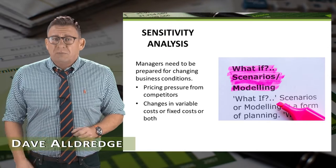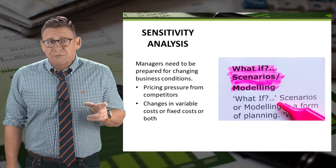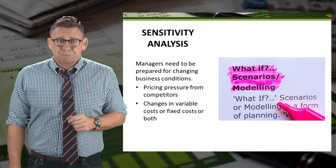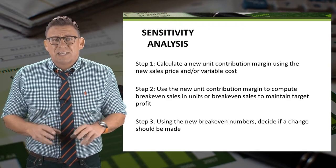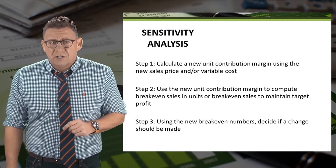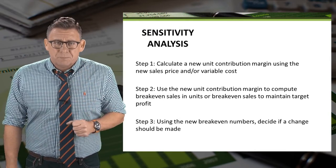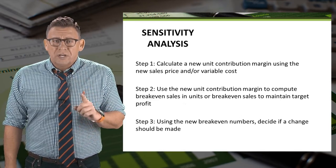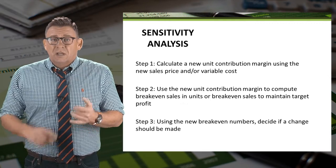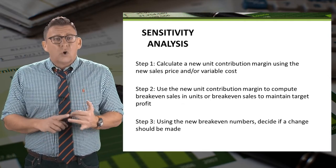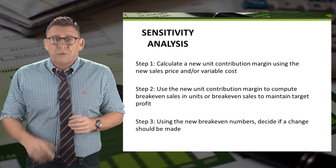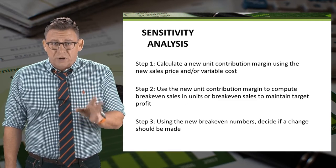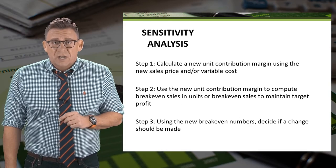Managers need to be prepared for changing business conditions. Often we call this what-if or sensitivity analysis. CVP is a powerful tool to do this kind of analysis. Sometimes sensitivity analysis can seem overwhelming with so much data to consider. But let's focus on the steps. The first and most important step is to calculate a new unit contribution margin using either new sales price or new variable cost or both. Then we will use the new unit contribution to compute breakeven sales in units or targeted operating income.